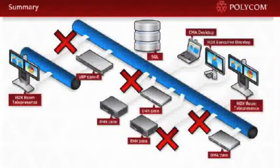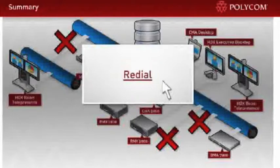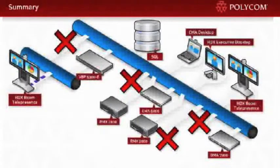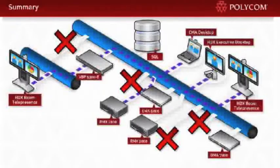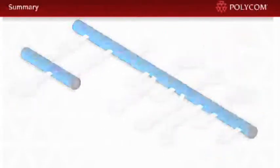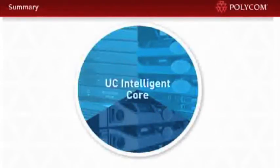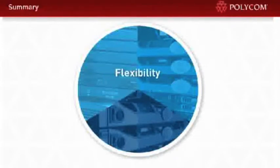So we just witnessed four catastrophic failures in real-world situations, and each time, to reconnect, all the user had to do was redial. Imagine your executives, vice presidents, or project teams conducting their telepresence meetings with barely any interruption as the UC Intelligent Core applies unmatched resiliency and redundancy to your operation. You no longer need to react on the fly, methodically analyze what went wrong, apply fixes, or just hope it works out okay. With the Polycom UC Intelligent Core, you have flexibility, redundancy, and resiliency built in.